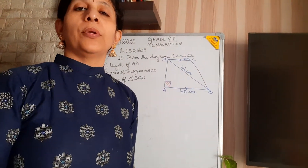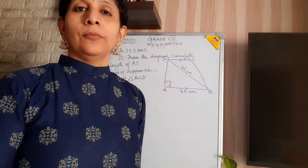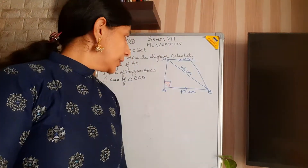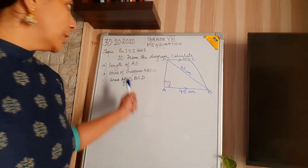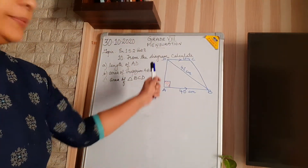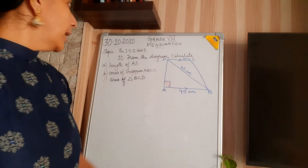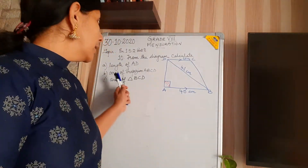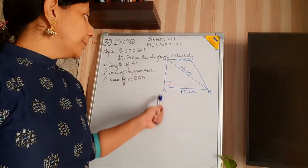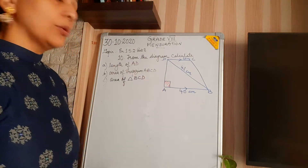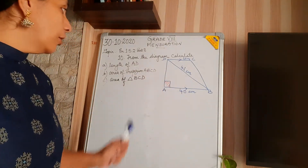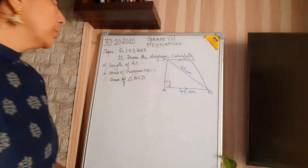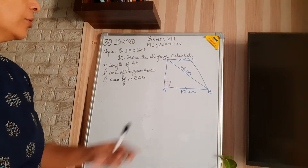Good morning students. We are going for the second part of exercise 15.2. Here is the first question. From the diagram, calculate the length of AD, the area of the trapezium ABCD, and also the area of triangle BCD. So how are you going to calculate the length of AD?